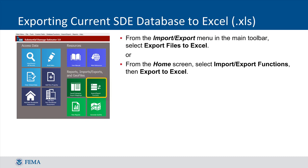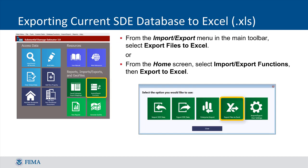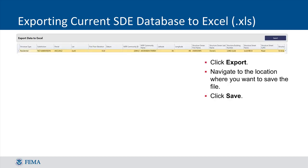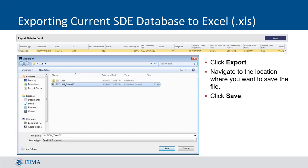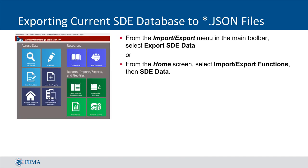From the home page, click the Import Export Functions feature, then select Export Files to Excel. All SDE records in the database will populate the table shown. Click Export in the top right corner. Select the location for the Excel export and click Save. An Excel file containing all SDE records should appear in the selected location. When exporting the SDE data, the tool will create a JSON file that contains all property and assessment records in the SDE database. A Photos folder is also created containing all photos attached to assessments.